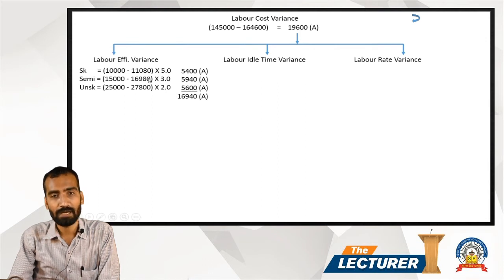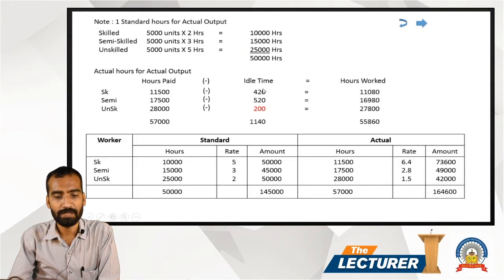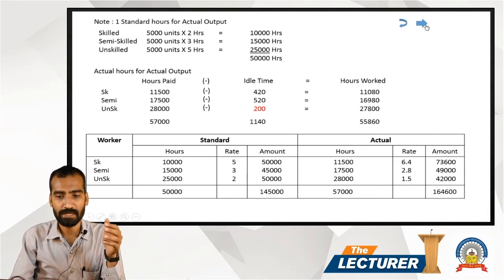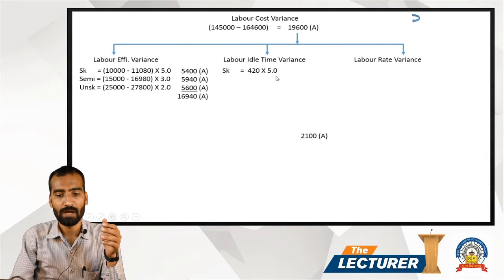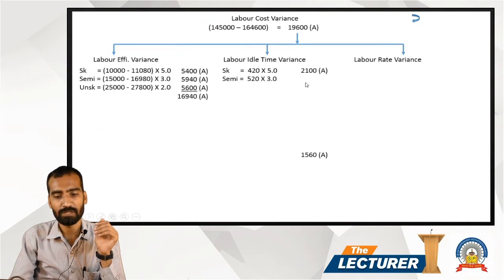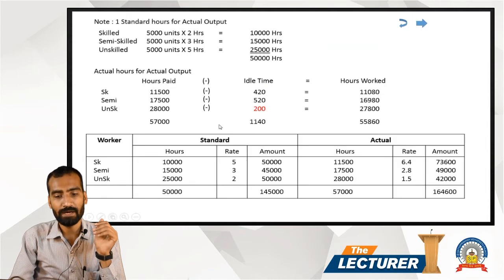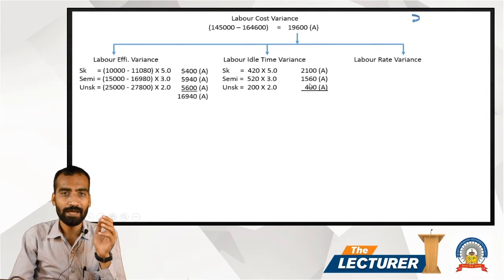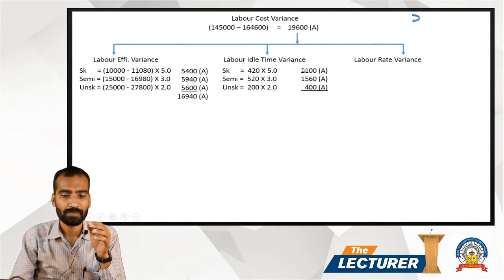Labor Idle Time Variance: idle hours are 420 / 520 / 200 for skilled, semi-skilled, and unskilled respectively, multiplied by standard rates 5, 3, and 2. Skilled: 420 × 5 = 2,100 Adverse; Semi-skilled: 520 × 3 = 1,560 Adverse; Unskilled: 200 × 2 = 400 Adverse. Total Idle Time Variance = 4,060 Adverse.